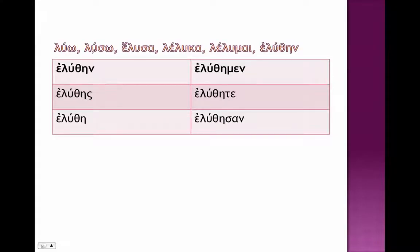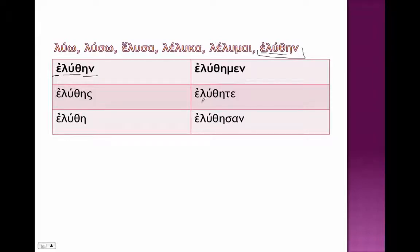We take these endings and add them onto the sixth principal part. If we take a look at luo, the sixth principal part is 'eleuthain' — our stem is going to be 'luth.' We add our epsilon augment: stem 'luth' plus ending 'ain' gives us eleuthain, eleuthes, eleuthay, eleuthamen, eleuthete, eleuthesan.